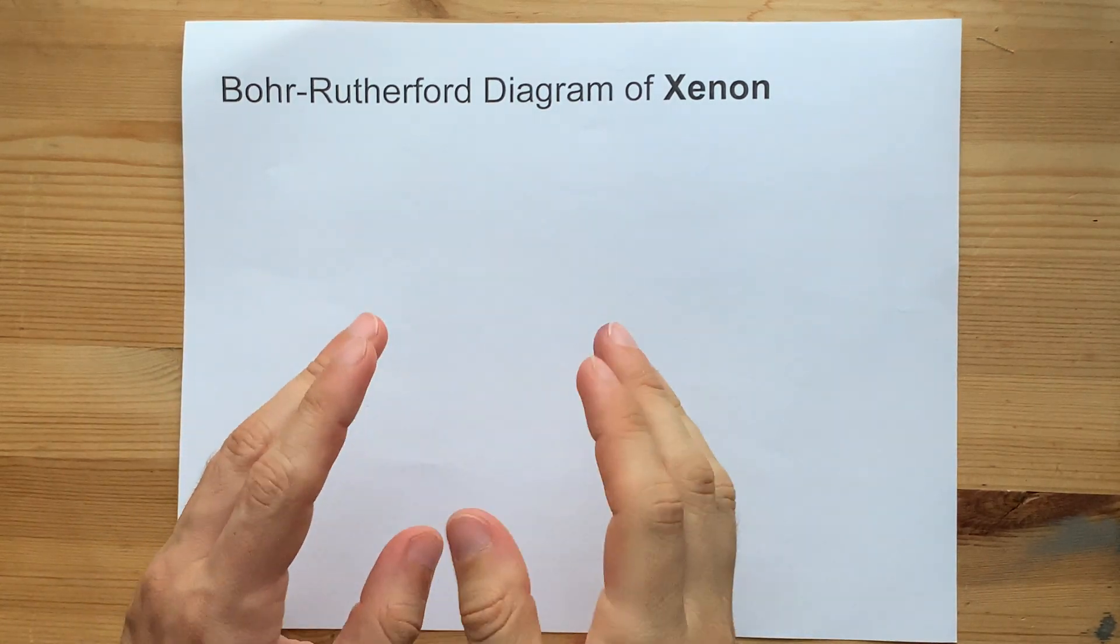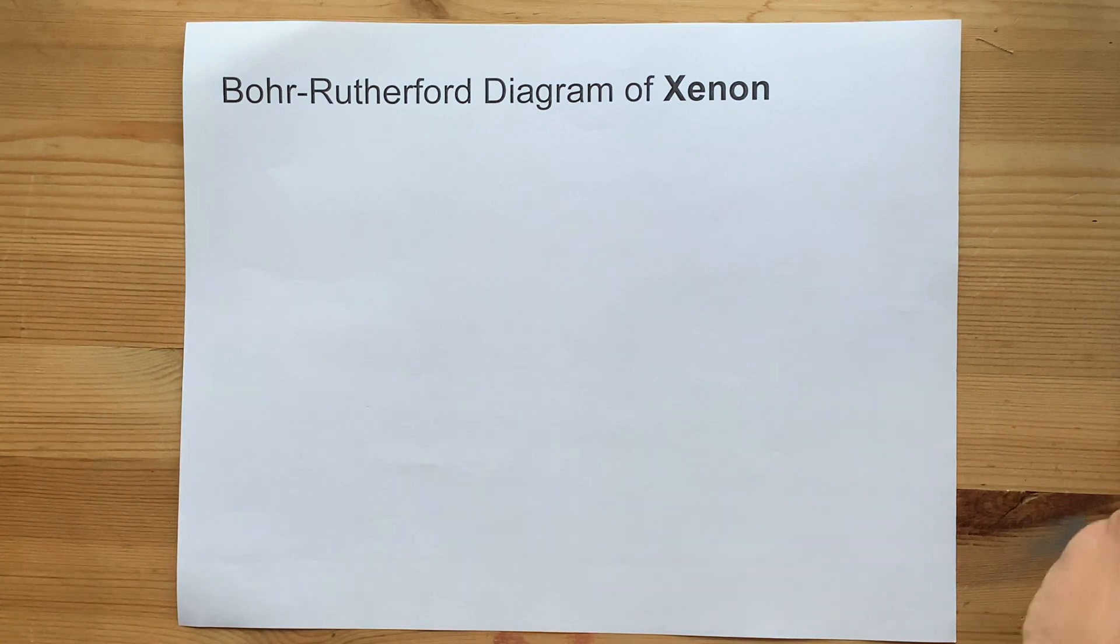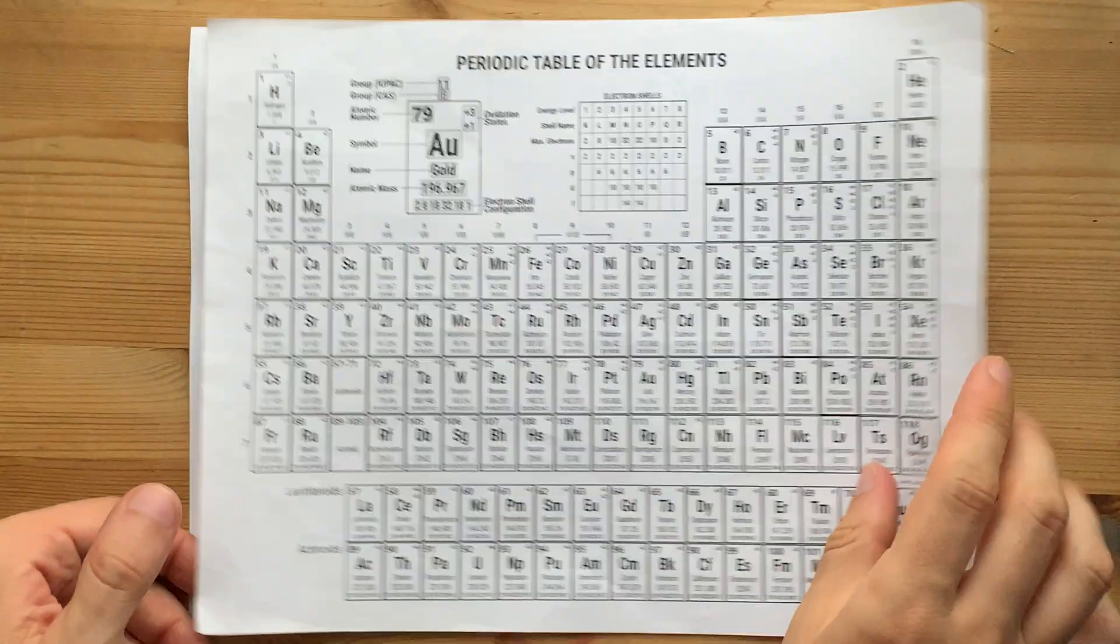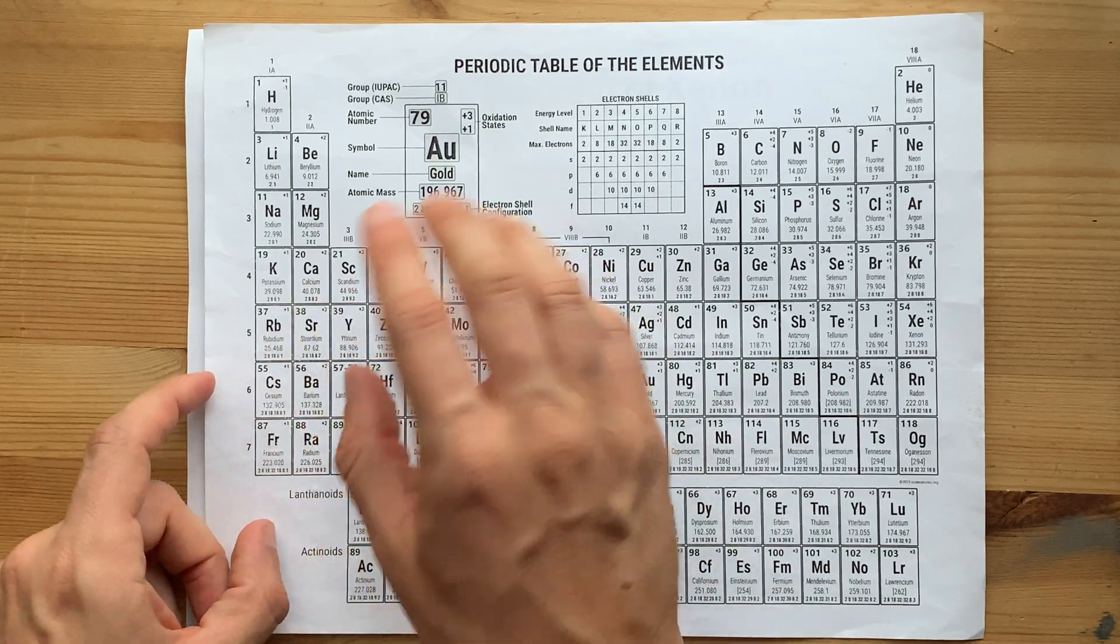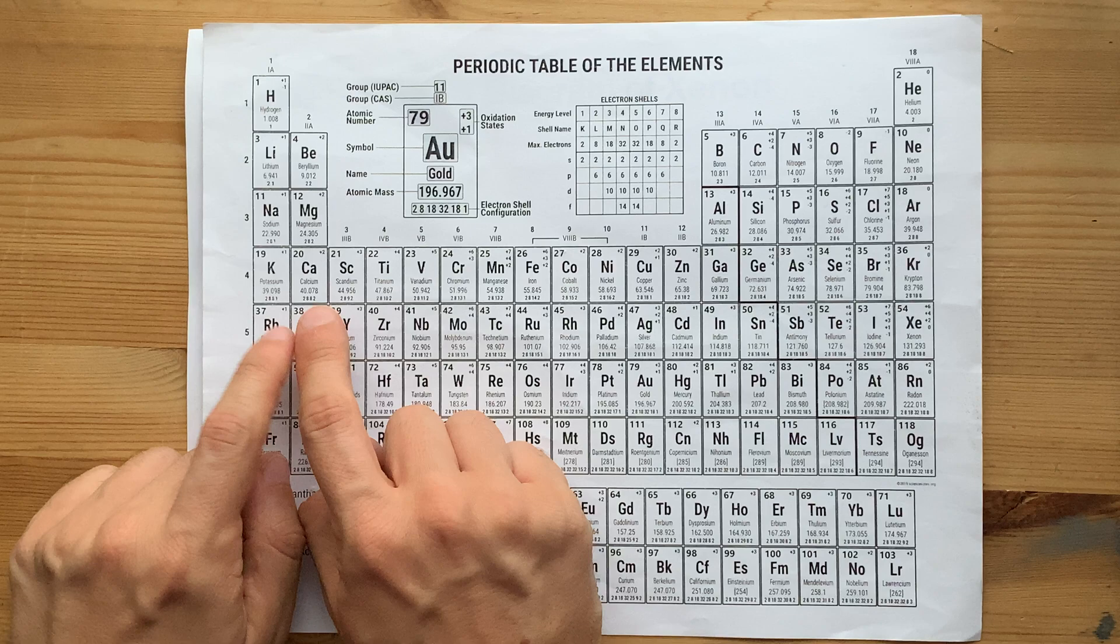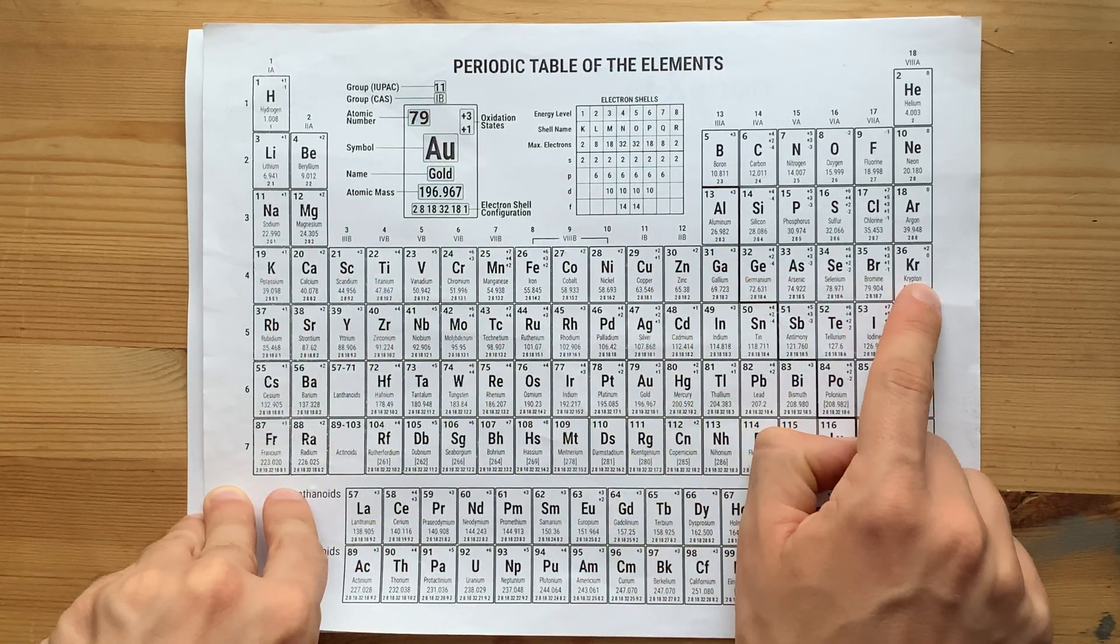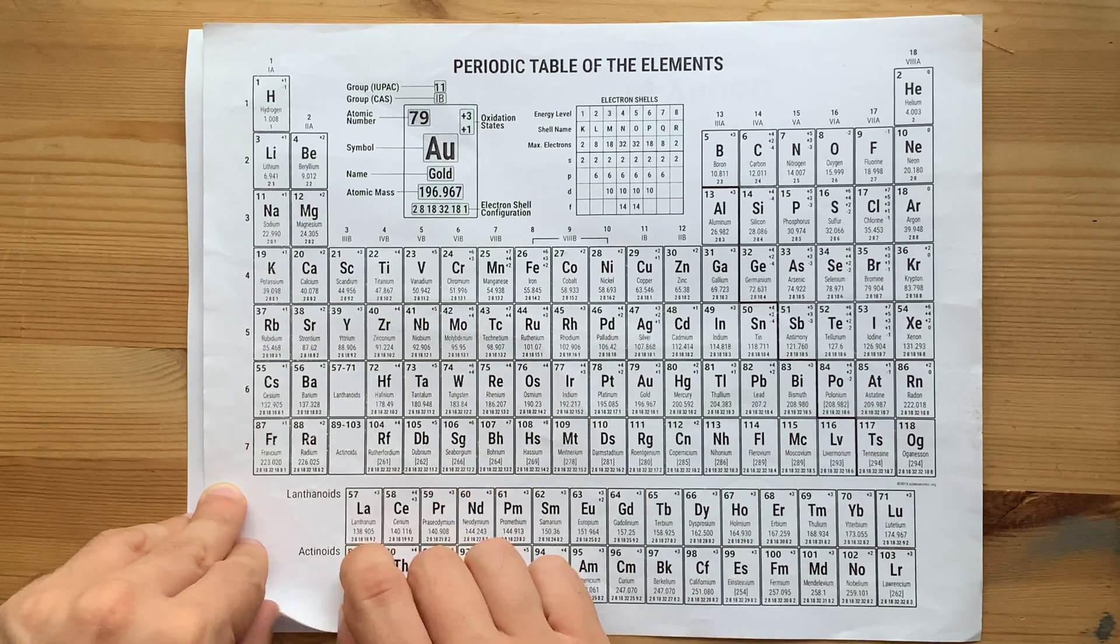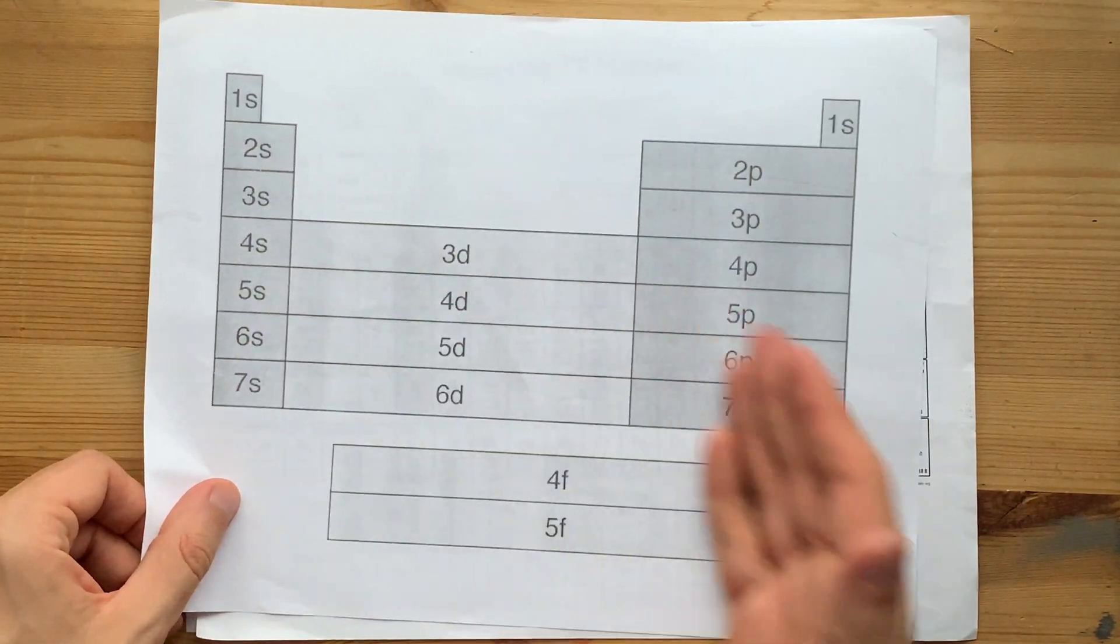You don't know real frustration until you've tried to draw the Bohr-Rutherford diagram of xenon. The reason is that once you get past calcium, you're not filling electrons from the inside of the atom out anymore. By the time you get here, you have to backtrack to the third shell, jump back up to the fourth, then the fifth. It really would help to know the order of filling.